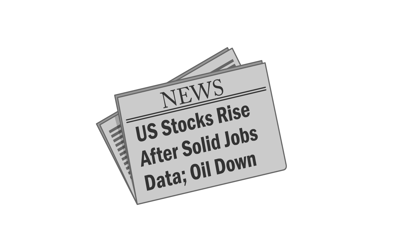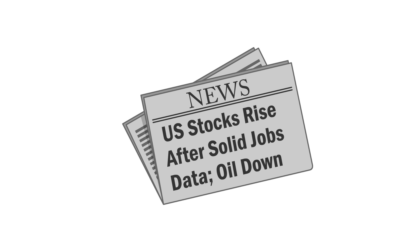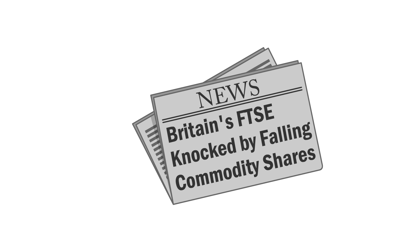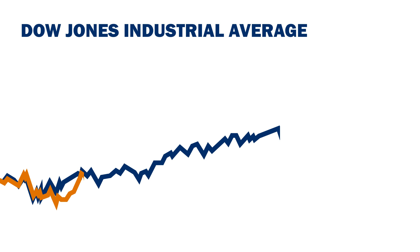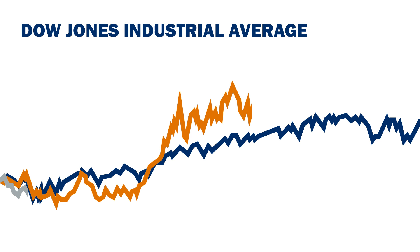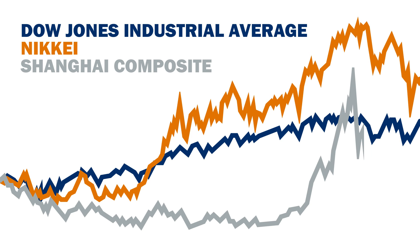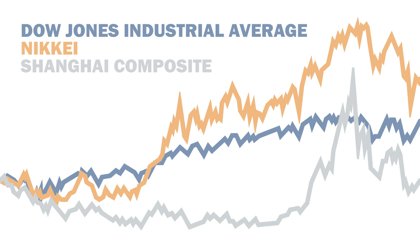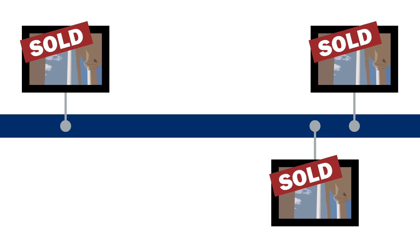Every day, financial news reports measure the status of stock markets around the globe using market indices. The level and change of the Dow Jones Industrial Average, Nikkei, Shanghai Composite, and others convey to investors in a simple way the day-to-day ups and downs of markets. However, one difficulty in constructing an art index is the frequency in which different pieces of art trade — a property we refer to as liquidity.